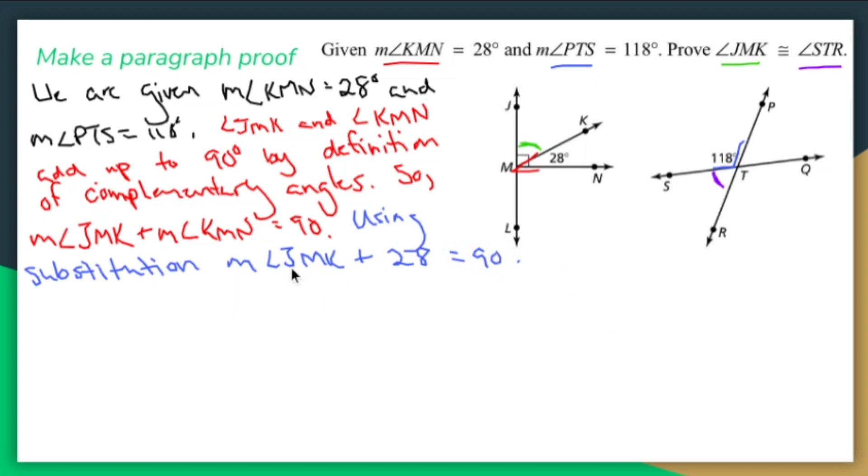Using substitution the measure of angle JMK plus 28 equals 90. Now I can solve for JMK by subtracting 28. So the measure of angle JMK equals 62 using the subtraction property.